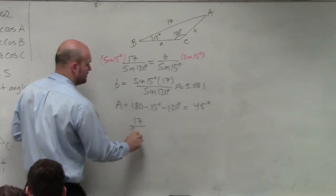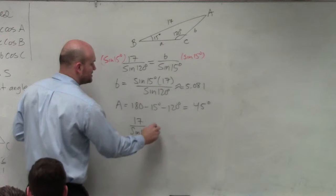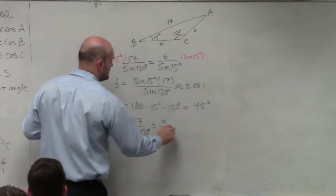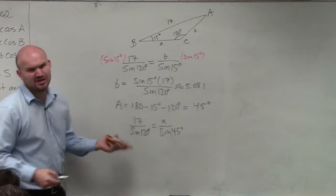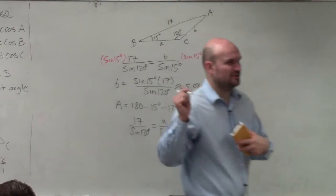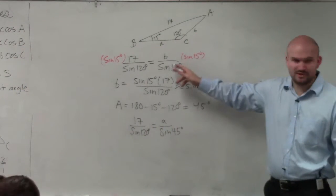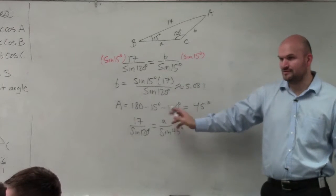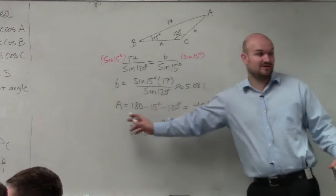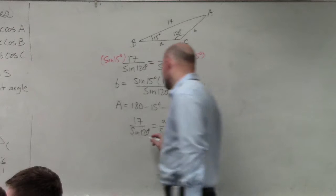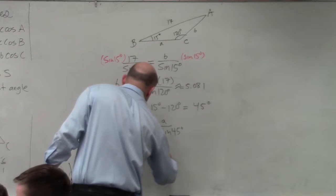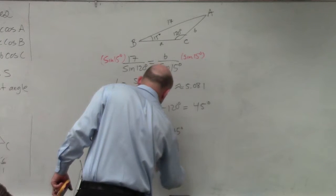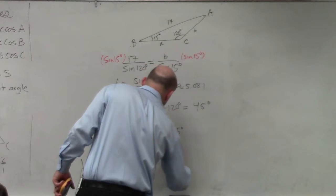So 17 over the sine of 120 degrees equals A over the sine of 45 degrees. And can I solve for A and just give you the answer without having to show all my step work? It's the same thing as what I did up here. I'm just solving for A now. So I'm going to multiply by sine of 45 degrees on both sides. And I'll get A is equal to sine of 45 degrees times 17 all over sine of 120.